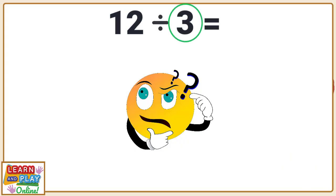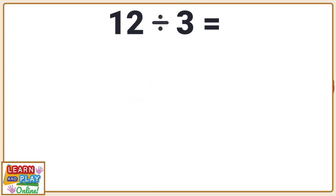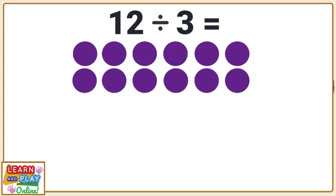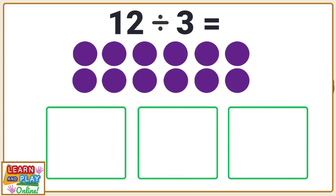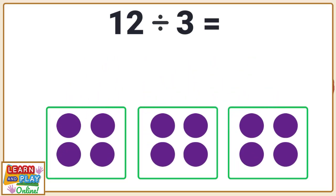To help us solve this division question, we are going to use 12 circles and divide them into three groups. How many circles do you think will be in each group? Let's share the circles to find out. There are four circles in each group, so 12 divided by 3 equals 4.